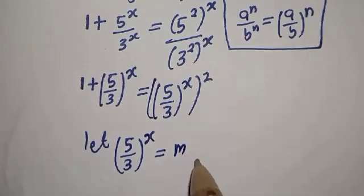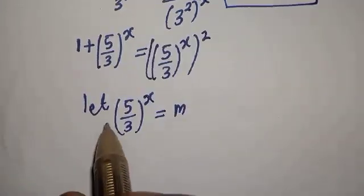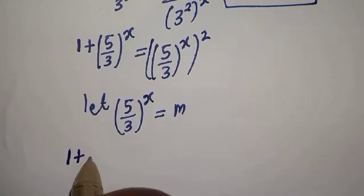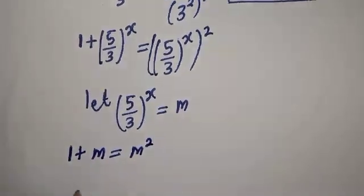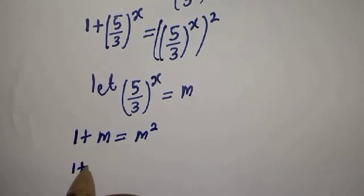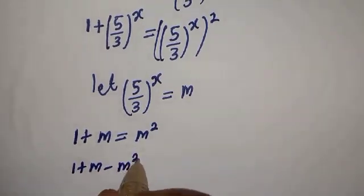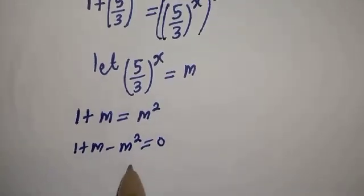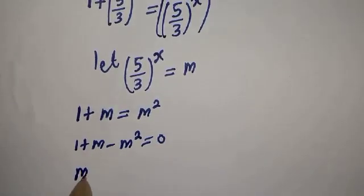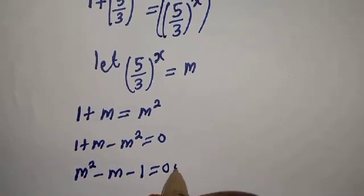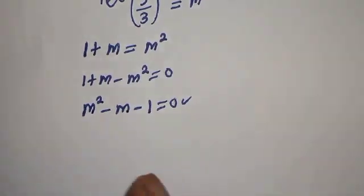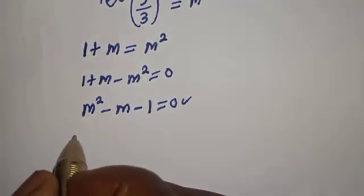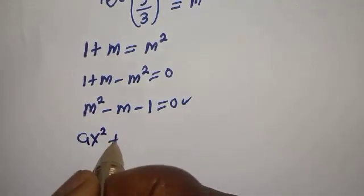Let 5 over 3 to the power of s equal m. Then here we have 1 plus m is equal to m squared. Rearranging: 1 plus m minus m squared is equal to 0, so m squared minus m minus 1 is equal to 0. This is a quadratic equation.